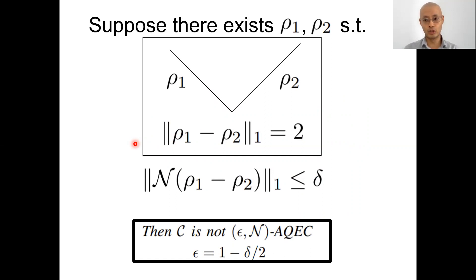Let us suppose there exists two orthogonal states. So the trace norm of the difference is two. And suppose, furthermore, that after you have your noisy channel acting on both of them, the difference of this is less than delta. Then you can show using triangle inequality that C is not epsilon AQEC when epsilon is 1 minus delta over 2.